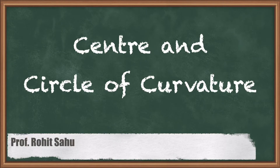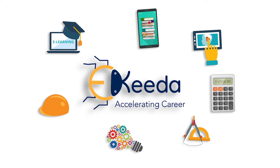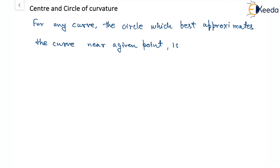Hello, in this session we'll discuss the topic of center and circle of curvature. Let's start with some basic definitions and understand them with the help of a diagram. If we have any curve, the circle which best approximates the curve near a given point is actually called the circle of curvature for the given curve at that particular point.